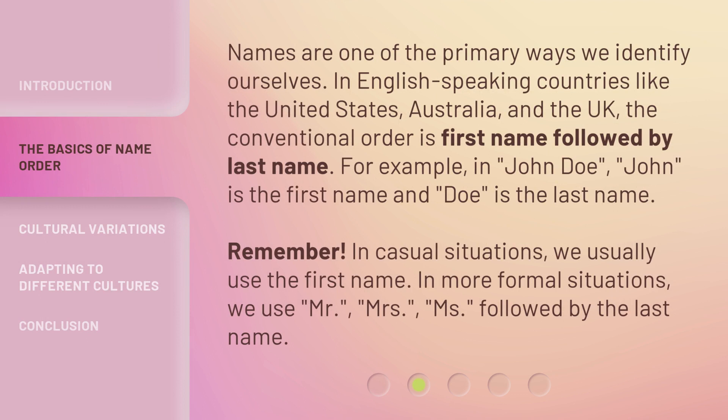Names are one of the primary ways we identify ourselves. In English-speaking countries like the United States, Australia, and the UK, the conventional order is first name followed by last name. For example, in John Doe, John is the first name and Doe is the last name. Remember, in casual situations we usually use the first name. In more formal situations, we use Mr., Mrs., or Ms., followed by the last name.